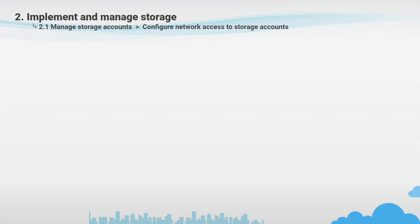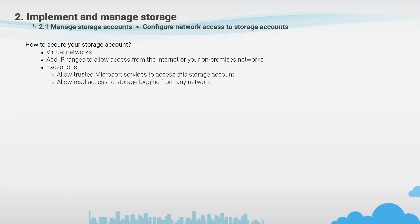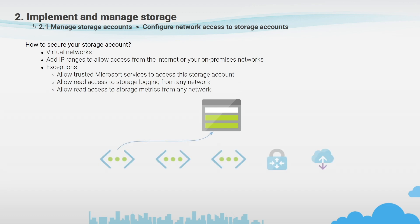From the previous demo, you saw there is a Network tab on storage account deployment. From there you can secure and control the level of access to your storage account based on the type and subset of networks used. When you apply network rules, only applications requesting data over the specified set of networks can access a storage account. You can limit access to requests originating from specific IP addresses, IP ranges, or from a list of subnets in an Azure virtual network.